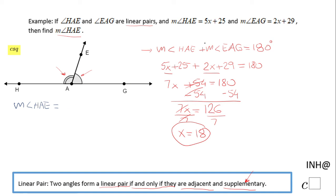So I'm gonna go here: measure of angle HAE. We're gonna have this expression 5x + 25, right? That's what's given to us. And in this expression we're gonna replace x with the value we found out, which is 18.